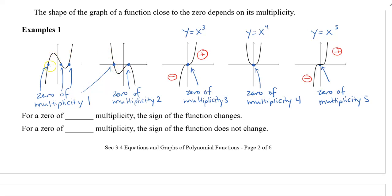Even with these cubic functions when these are multiplicity of one, we can see that it goes from negative to positive, back to negative, and back to positive. Same with this part. This zero of multiplicity one went from negative to positive. So for a zero of odd multiplicity, the sign of the function changes.